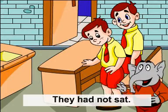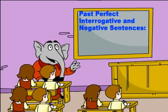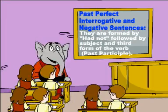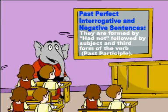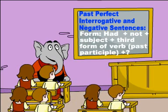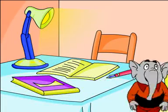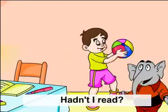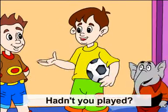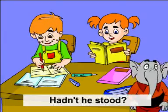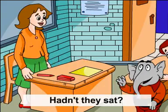4. Past perfect interrogative and negative sentences. They are formed by 'had not' followed by the subject and the third form of the verb (past participle). Formula: Had + not + subject + third form of the verb (past participle). Examples: Hadn't I read? Hadn't we sung? Hadn't you played? Hadn't he stood? Hadn't they sat?